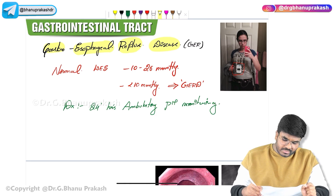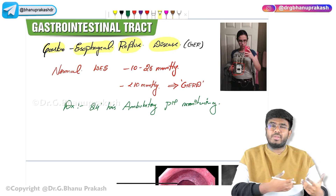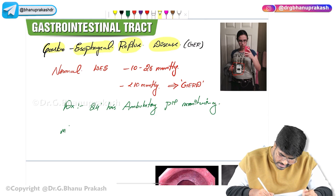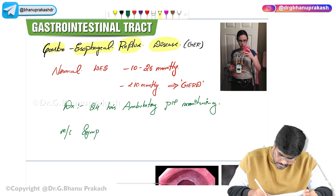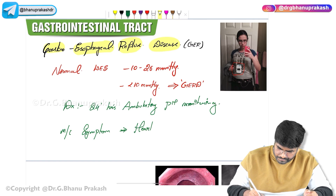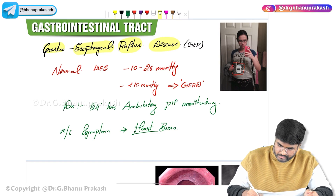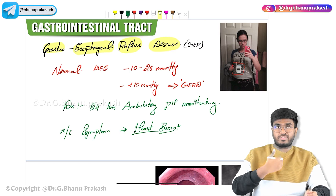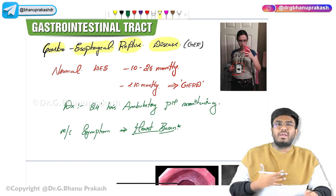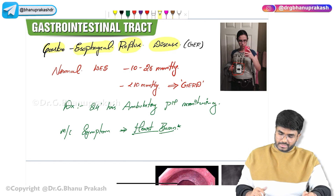The most common symptom of gastroesophageal reflux disease is heartburn. Because acid is getting refluxed back into the esophagus, patients feel a burning sensation in the chest — that is called heartburn.